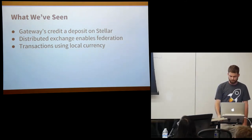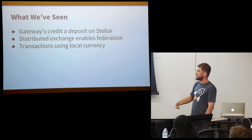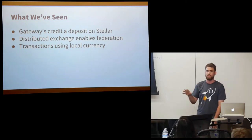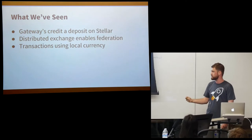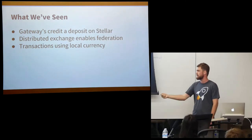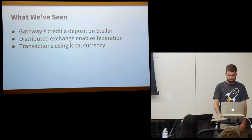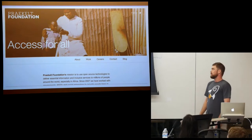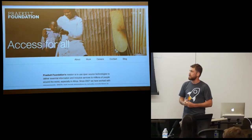So we've seen how a gateway credits deposits on the Stellar network, and how the distributed exchange enables federation between different gateways — so you can use your PayPal balance to send somebody a different currency from a different system. Now I'd like to talk about the real world example I alluded to earlier, which is the Perket Foundation.